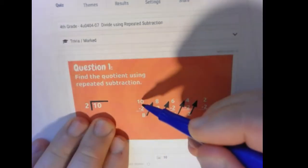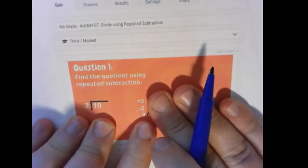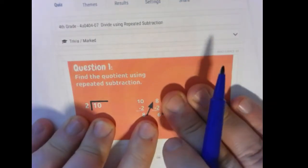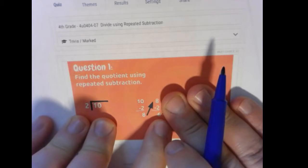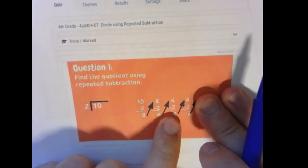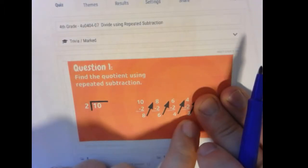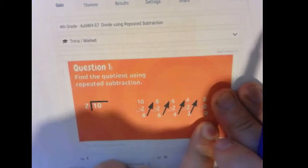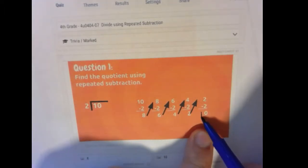So instead of dividing, we're going to do 10 minus 2 gives us 8. Bring that to the top. 8 minus 2 gives us 6. Bring that up. 6 minus 2 gives us 4. 4 minus 2 gives us 2. 2 minus 2 gives us 0. So notice we want to get all the way down until we get 0.